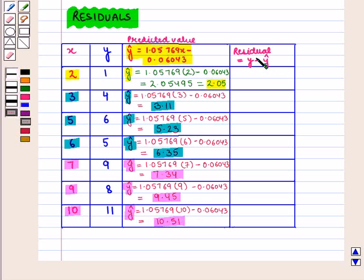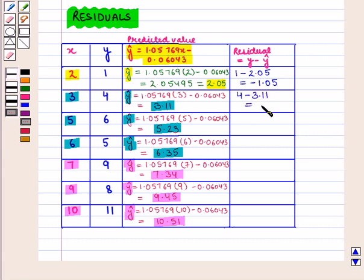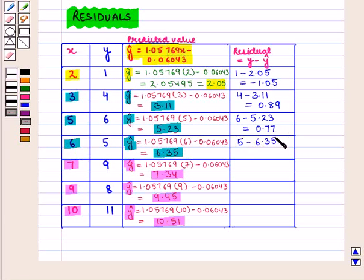Now we will find the residuals. For x = 2, residual = y − ŷ = 1 − 2.05 = −1.05. For x = 3, residual = 4 − 3.11 = 0.89. For x = 5, residual = 6 − 5.23 = 0.77. For x = 6, residual = 5 − 6.35 = −1.35.